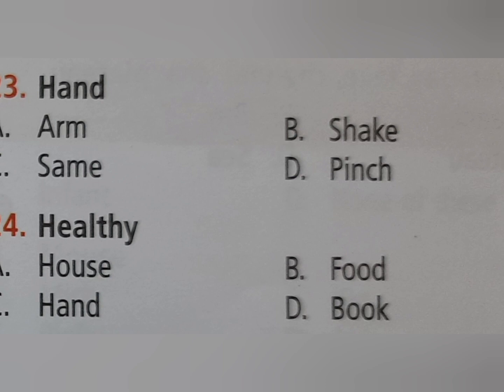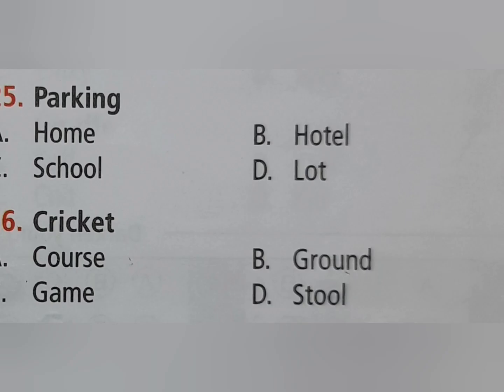Fourth: healthy — option A house, option B food, option C hand, option D book. The right answer is option B food — healthy food. Fifth: parking — option A home, option B hotel, option C school, option D lot.